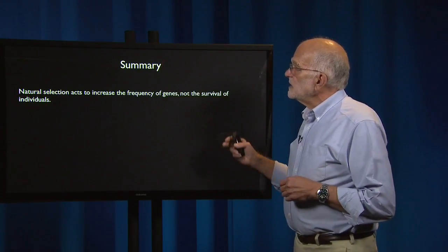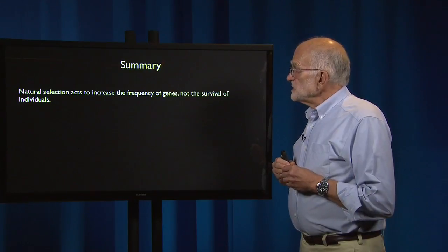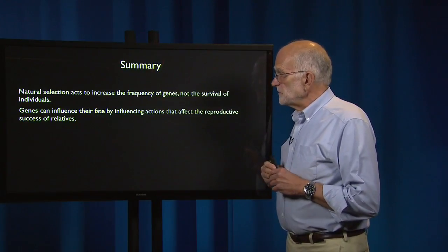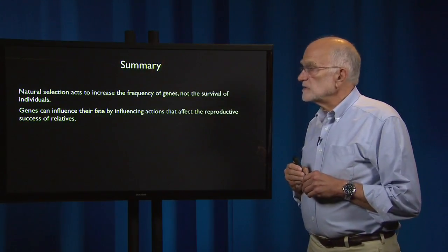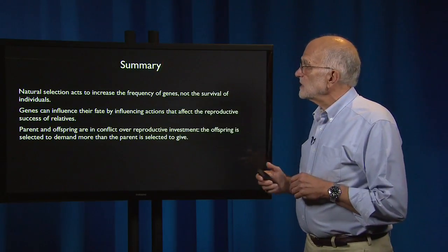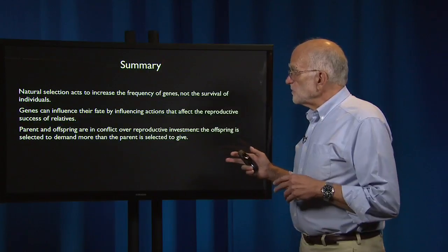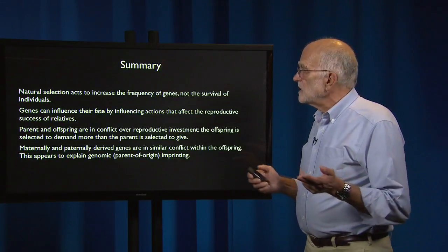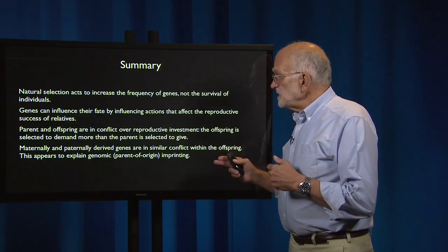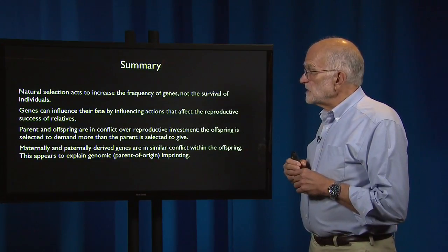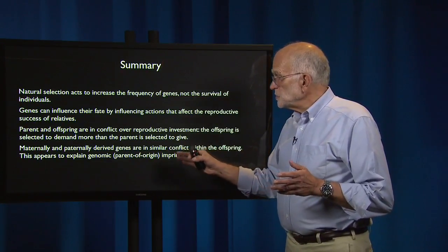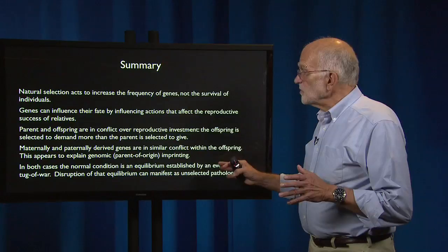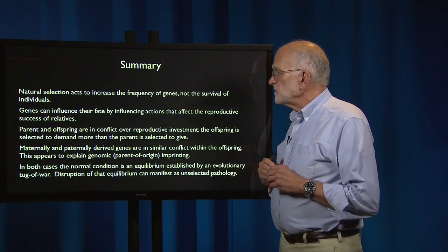To summarize: natural selection acts to increase the frequency of genes, not the survival of individuals. Genes can influence their fate by influencing actions that affect the reproductive success of relatives. Parent and offspring are in conflict over reproductive investment — the offspring is selected to demand more than the parent is selected to give. Maternally and paternally-derived genes are in similar conflict within the offspring, and this seems to explain genomic imprinting, that is, parent-of-origin imprinting. In both cases, the normal condition is an equilibrium established by an evolutionary tug-of-war. Disrupting that equilibrium can manifest in unselected pathology.